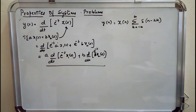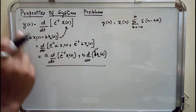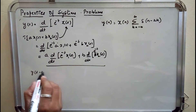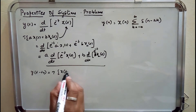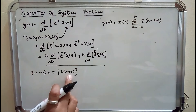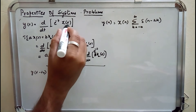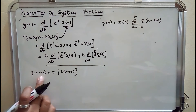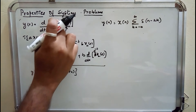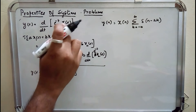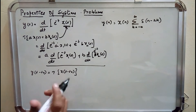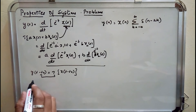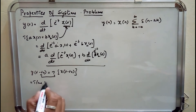The second property is time invariance, meaning if there is a shift in the input, there should be a similar shift in the output. That is, y(t − t₀) must equal T{x(t − t₀)}. If there is a shift in the input, it will only be present in x(t), giving x(t − t₀). Whereas when you shift the output, there is a shift in e^(-t) as well as x(t − t₀), so both will not be equal. Hence the system is time variant.